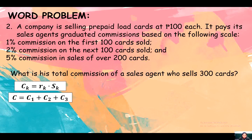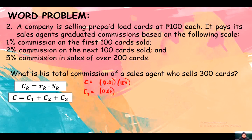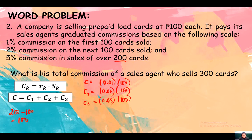Let's get the commission for each graduated tier. Commission 1: 0.01 times 100. Commission 2: 0.02 times 100. Commission 3: 0.05 times 100. This last 100 comes from 300 minus 200 equals 100 cards excess. Now let's get all the products and add them together.